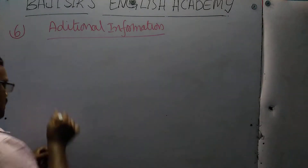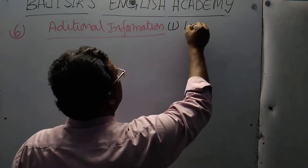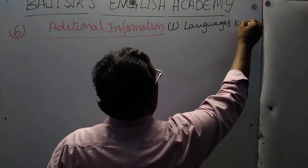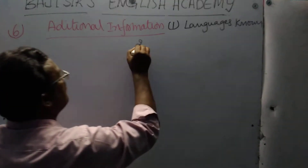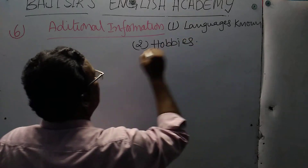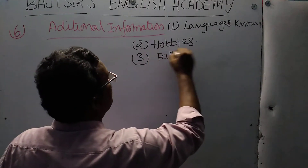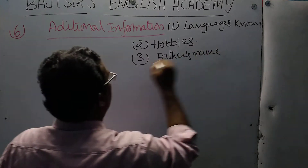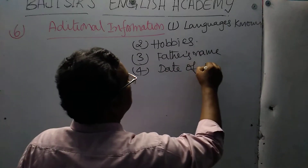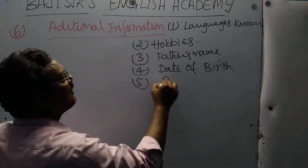Here we talked about: one, languages known; the second one, hobbies we developed in our life; the third one, father's name; the fourth one, date of birth; and the fifth one, references.